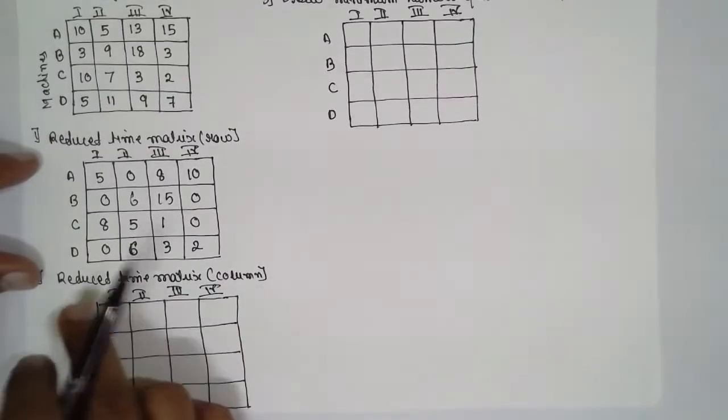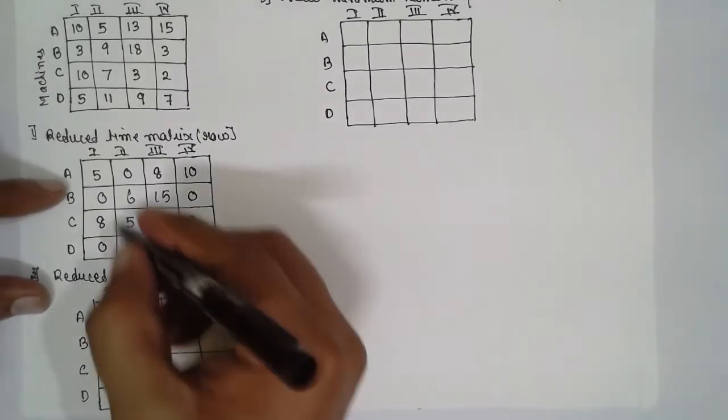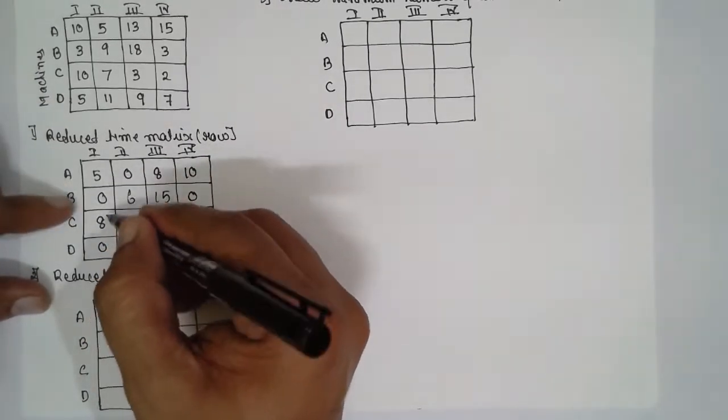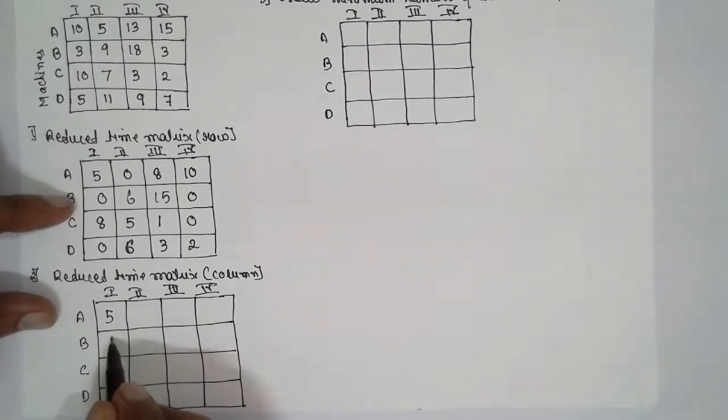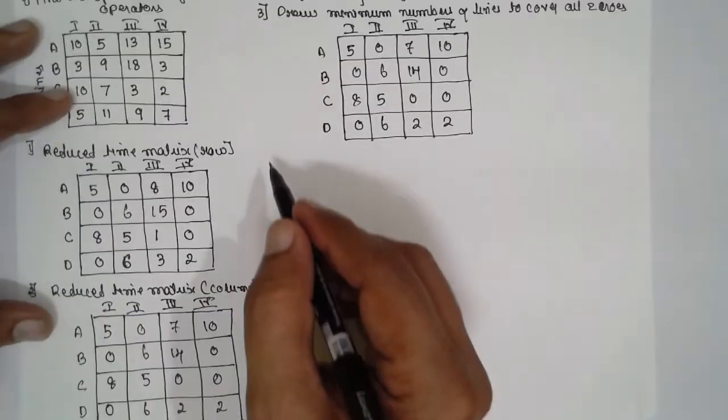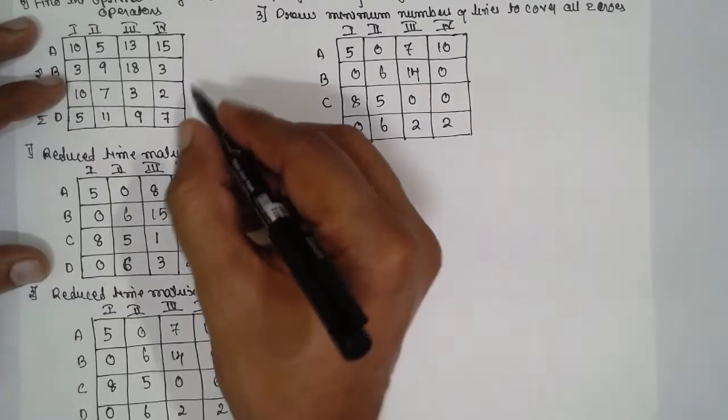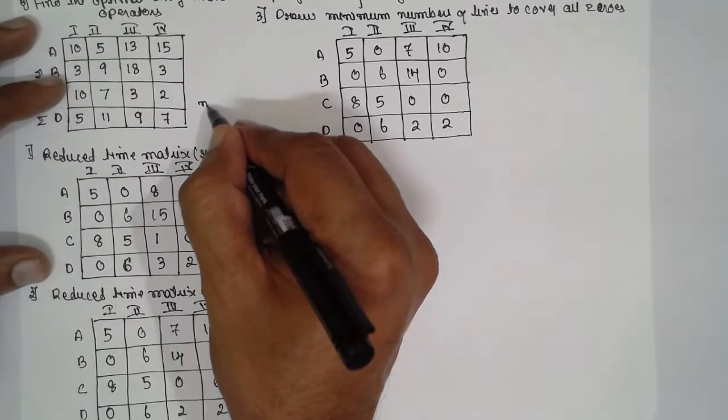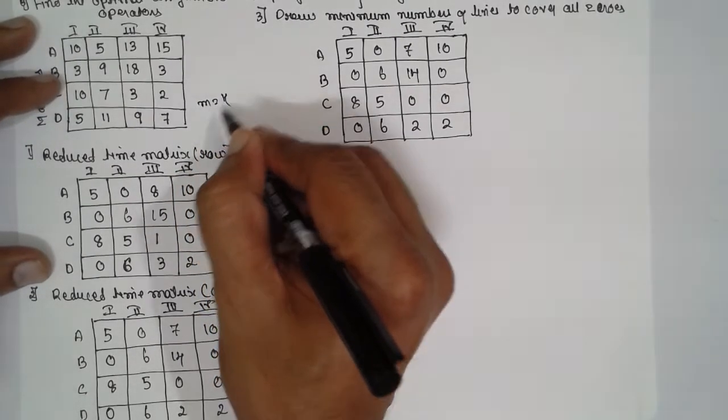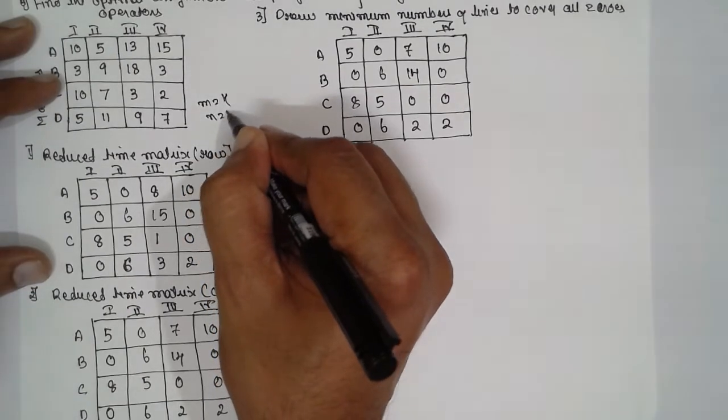Now similarly for the row, reducing the time matrix for the row. This is the row, smallest is 0, write this one as it is: 5, 0, 8, 0. Again there is 0, the smallest here: 0, 6, 5, 6. That means 6 minus 0 is 6, 5 minus 0 is 5.